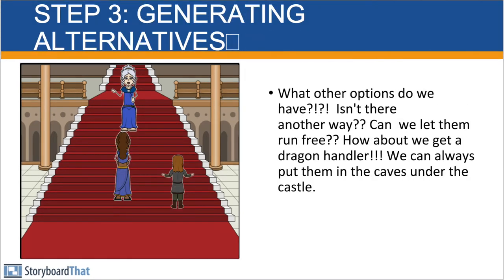Together with her trusted advisors, they partake in step three, which is generating alternatives. They put together different options on how to control their dragons. One of the options is to just do nothing and let the dragons run free. If they do that, there's a high potential that the dragons will continue to eat all the cows and goats and stuff and possibly ruin all the support that she has with her people. Another option is to reach out and see if there are any dragon handlers in the area — somebody that can come in and teach the dragons to sit, offer some treats, teach some obedience, and make them disciplined dragons. The fourth alternative is to lock the dragons in a cave underneath the castle so they can't get out, can't eat anybody's goats, can't mess with anybody's cows.